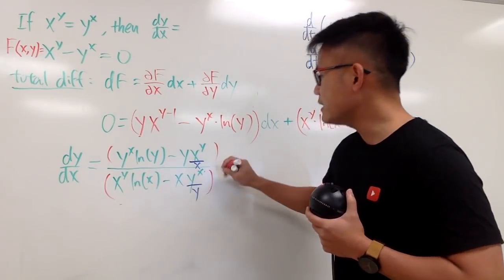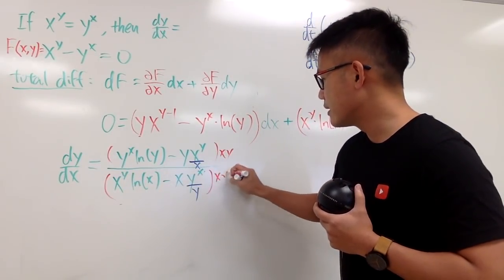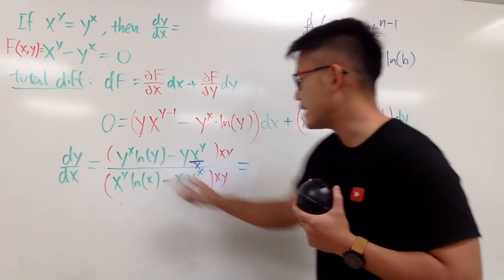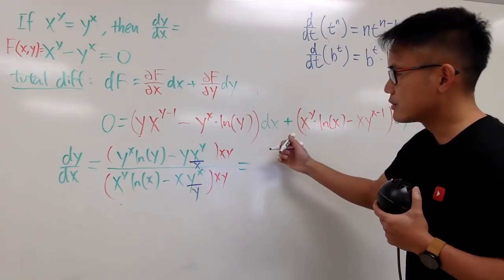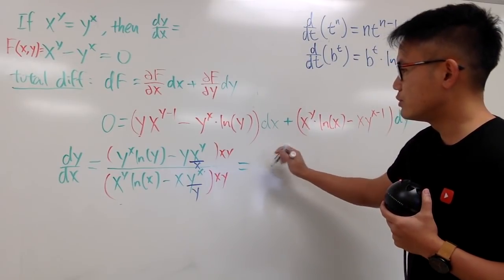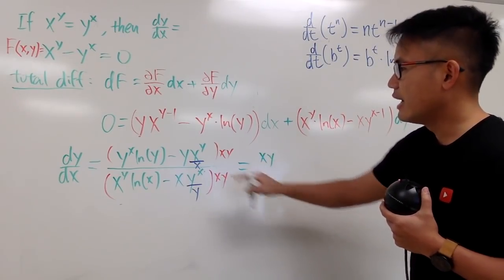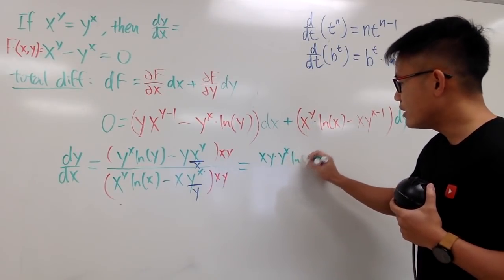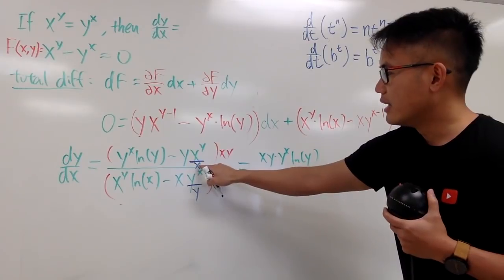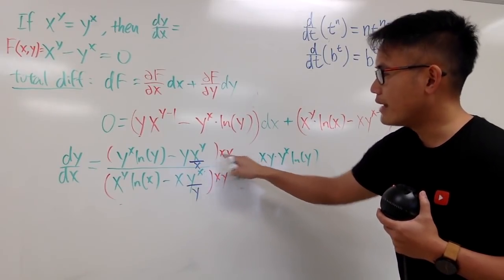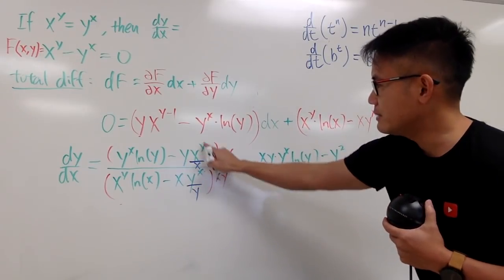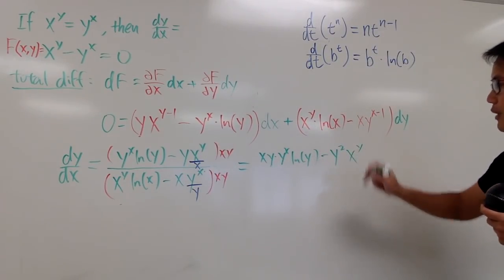You can just multiply the top and bottom by xy. And now, let's see what we have. This times that, we get xy. Let me just write this down. xy times y to the x power ln y, and then this times that, the x cancel out. y times y is y squared, so we have minus y squared, and we still have this part, x to the y's power.